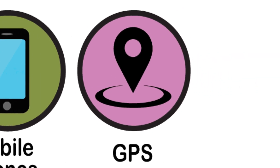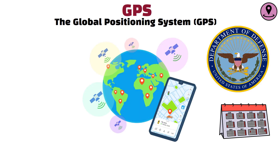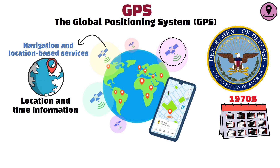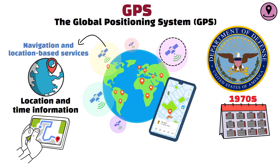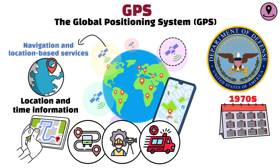GPS and the Global Positioning System. GPS, developed by the U.S. Department of Defense in the 1970s, revolutionized navigation and location-based services. GPS uses a network of satellites to provide precise location and time information, enabling users to determine their position anywhere on Earth. The technology has found applications in transportation, surveying, emergency services, and personal navigation, making it an integral part of modern life.